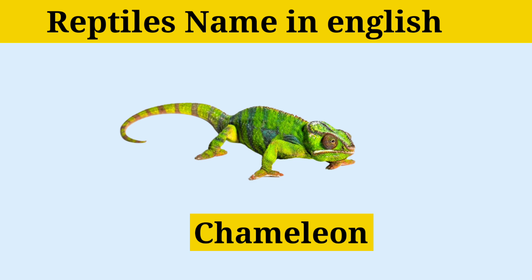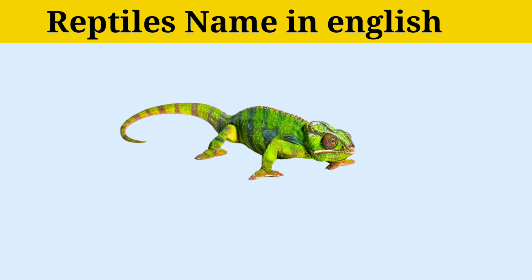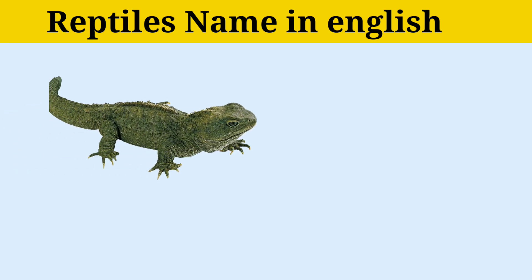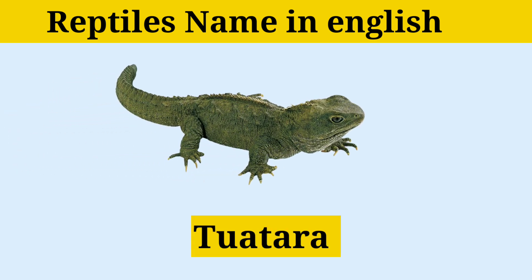Chameleon. C-H-A-M-E-L-E-O-N. Chameleon. Tuatara. T-U-A-T-A-R-A. Tuatara is a creature found in New Zealand.